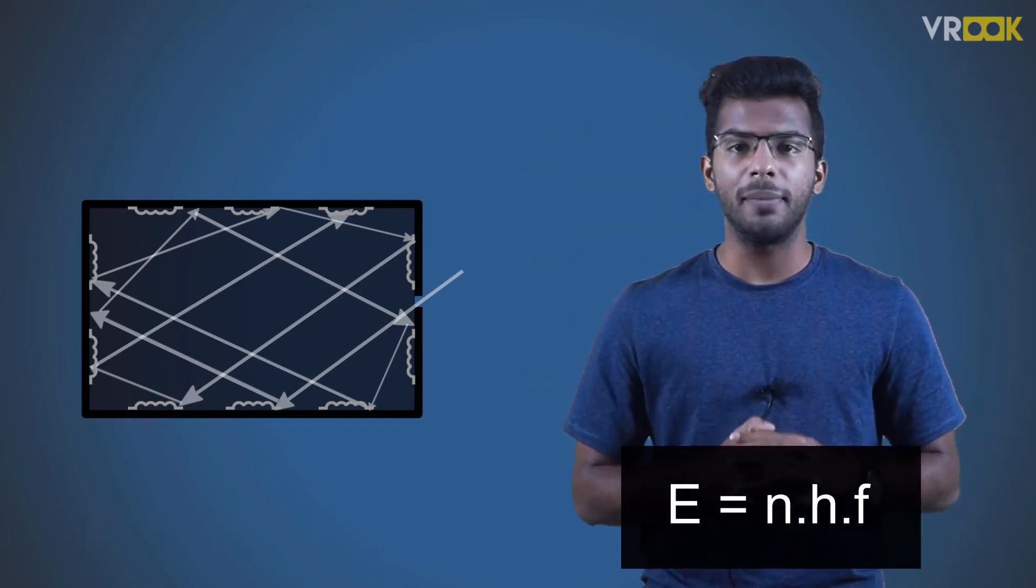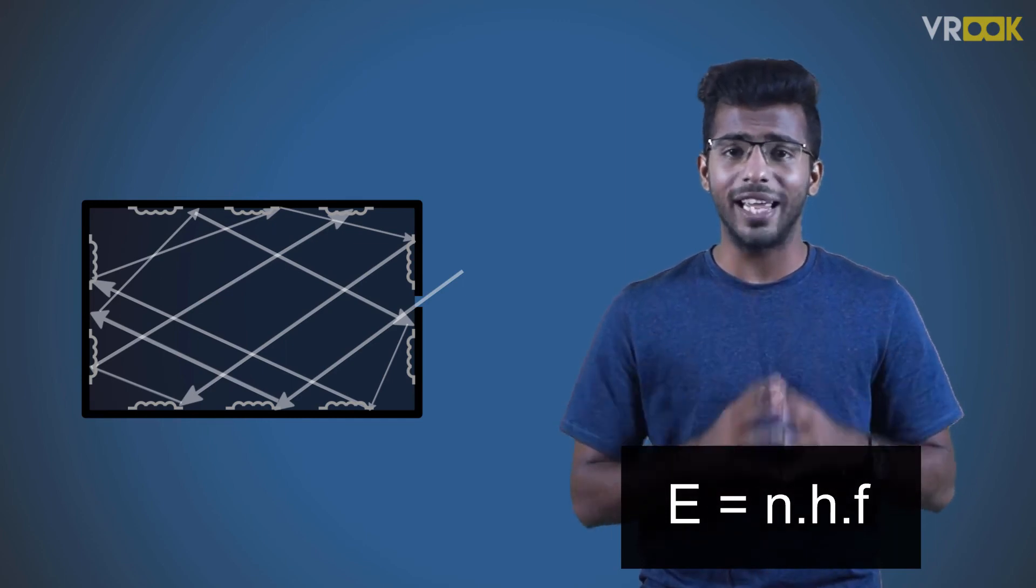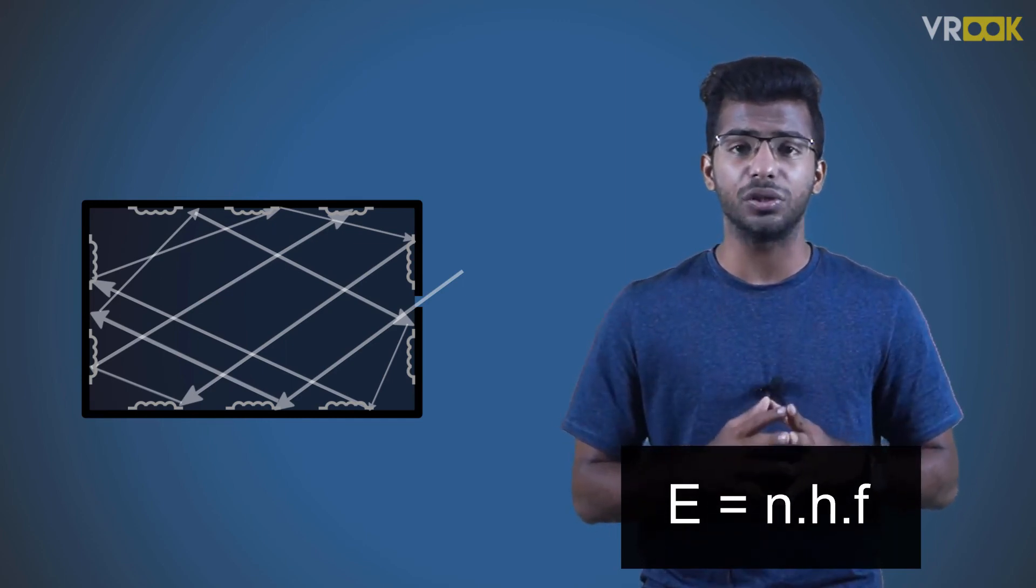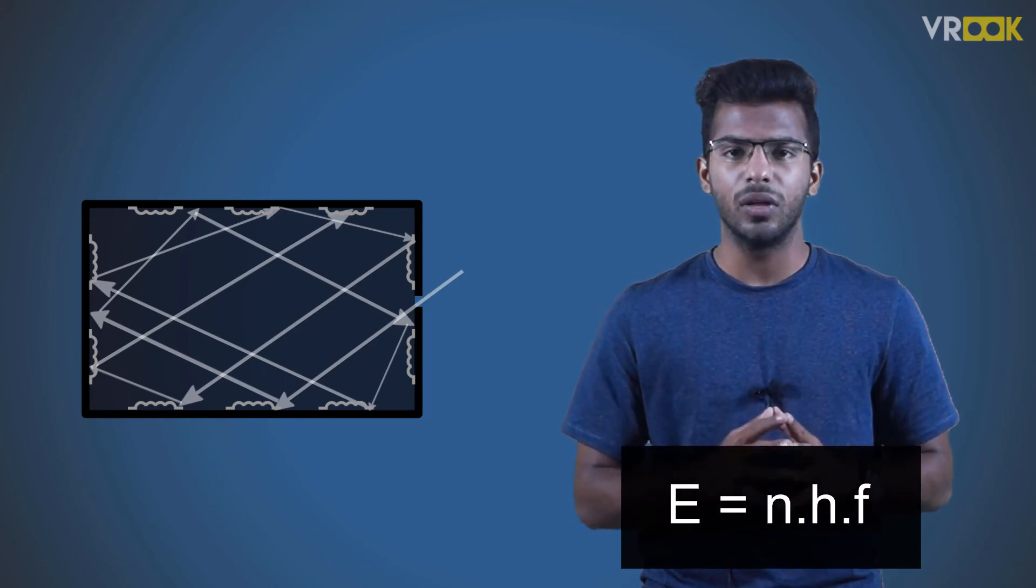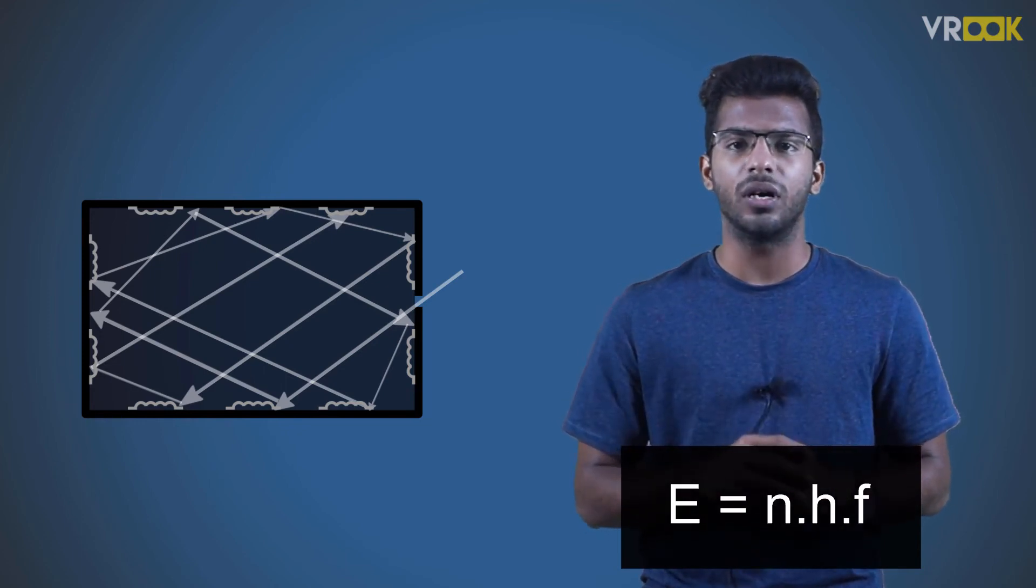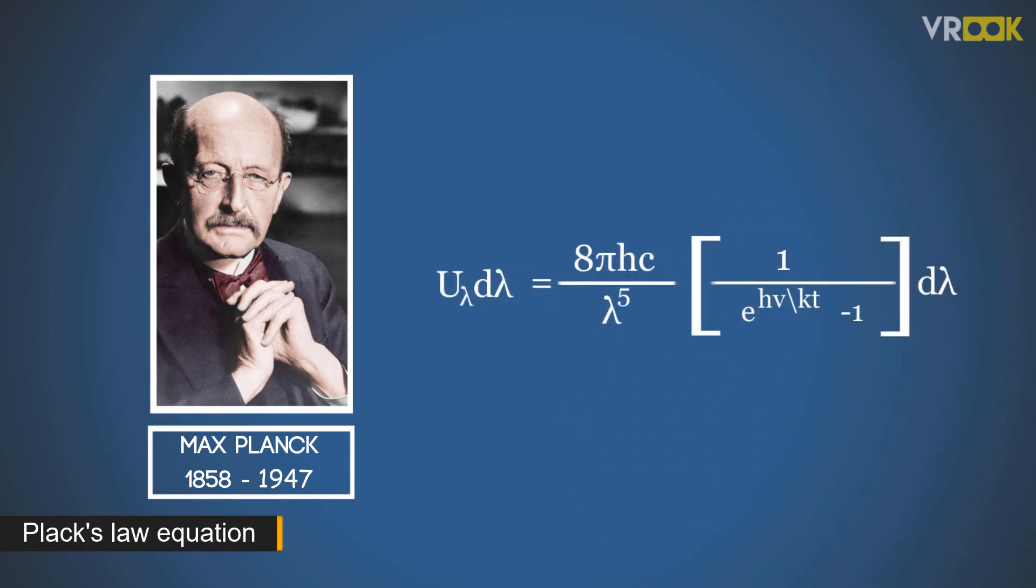This proposition by Max Planck was a huge success. Based on this, he gave an expression for blackbody radiation which suits the experimental curve exactly. This great scientific work earned him Nobel Prize in the year 1918. Now let us look at the Max Planck's law equation.